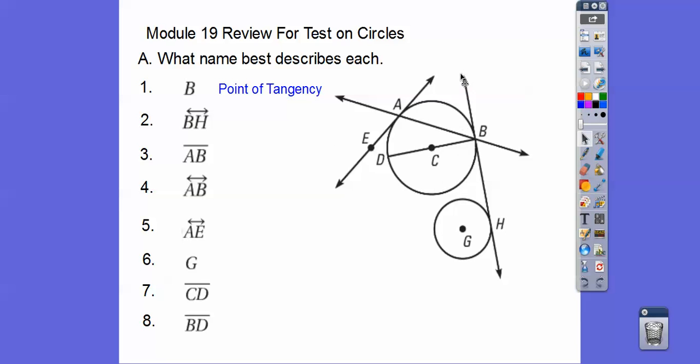Line B-H is tangent to both circles, and when it's tangent to more than one circle, it's called a common tangent. Segment A-B is a chord. Line A-B, that is a secant. A secant is a line that contains a chord. Line A-E, that is a tangent line, or just tangent.